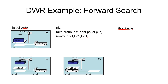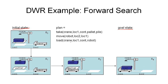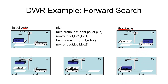We continue through the loop and see this is not a goal state, so we compute the applicable actions again. Now we try to load the container with the crane at the location, and we get a new state where the container is on the robot. This is not a goal state, so we go through the loop and find there's a final action: we need to move the robot to the other location. We get a new state, and this is now our goal state. The algorithm terminates and returns a plan consisting of those four actions that gave us the path through this state space.